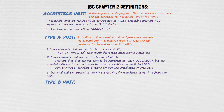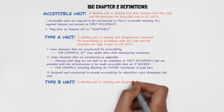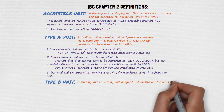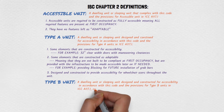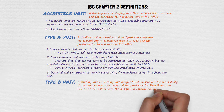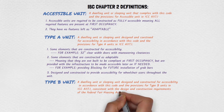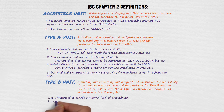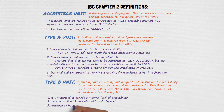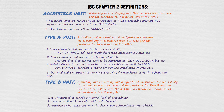A Type B unit is a dwelling unit or sleeping unit designed and constructed for accessibility in accordance with this code and the provisions for Type B units in ICC A117.1, consistent with the design and construction requirements of the Federal Fair Housing Act. A Type B unit is constructed to provide a minimum level of accessibility. It is less accessible than both an accessible unit and a Type A unit, and it is intended to be consistent with the Fair Housing Amendments Act, the FHAA.